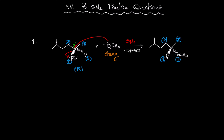Priority number four is not facing backward, so I have to switch the places of the methoxide and the hydrogen. Therefore one comes here and four comes here, so I have one, two, three — clockwise — but because I switched the places of the least priority and the group facing backward, the R becomes S. For an SN2 mechanism we have inversion of configuration: the alkyl halide has R stereochemistry, but the product has S stereochemistry.